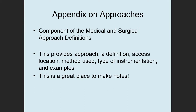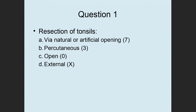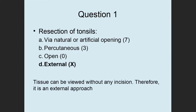Now let's do some practice selecting the correct approach value. Question 1: resection of tonsils — is the approach via natural or artificial opening, percutaneous, open, or external? The answer is external. The tissue can be viewed without any incision, therefore it is an external approach. Putting instruments just into the mouth is not considered a natural or artificial opening.